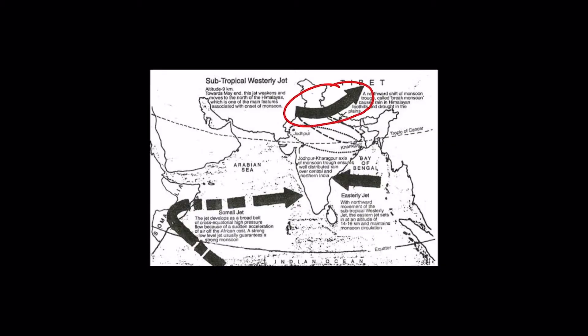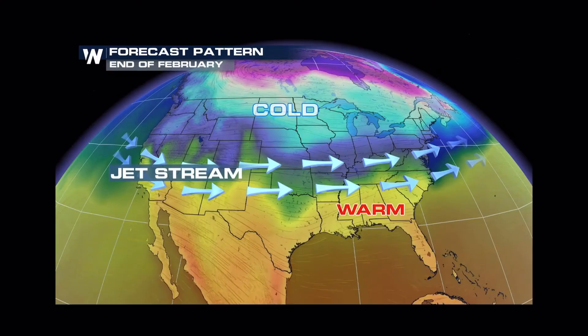Now if we look at India, the subtropical and the tropical easterly jet streams pass over our country. I'll talk about both of these jet streams shortly. Let's now talk about how jet streams are formed.